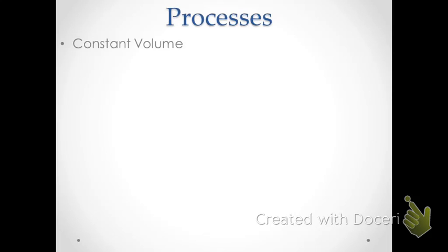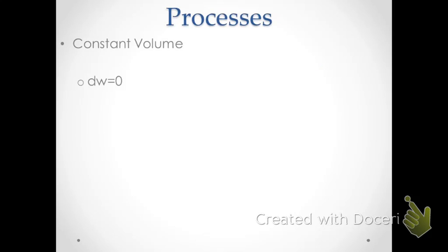The simplest case is a constant volume process, where the piston doesn't move at all and the volume before and after is the same. Because the volume change equals zero, dW — which equals negative P dV — is also equal to zero. So for a constant volume process, the work done is equal to zero.